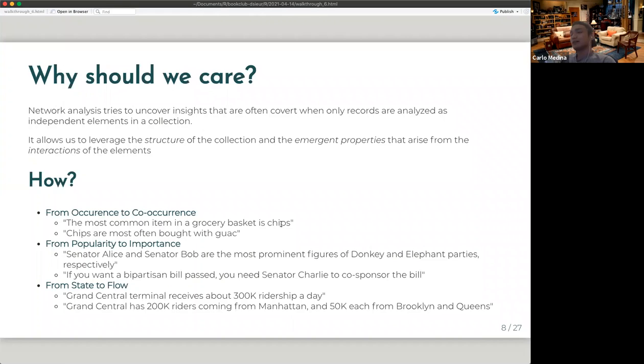And then the last thing is about this movement from state to flow. State meaning the property of something is fixed, but we move to flow. For example, Grand Central Terminal receives 300,000 riderships at the given day. But if we do a network analysis type of approach there, we could get information such as Grand Central has 200,000 riders coming from Manhattan, while 50,000 riders are coming from Brooklyn or Queens, which gives us more information than the 300,000 ridership in a given day. So hopefully I convinced you on why we should care about network analysis.